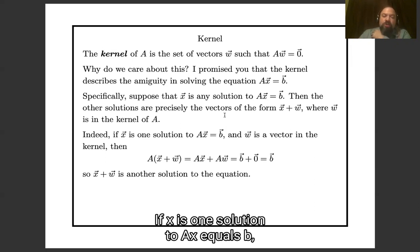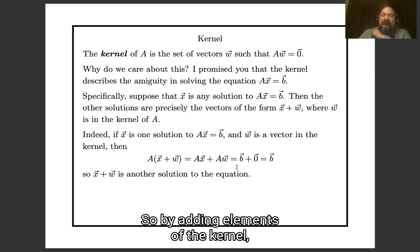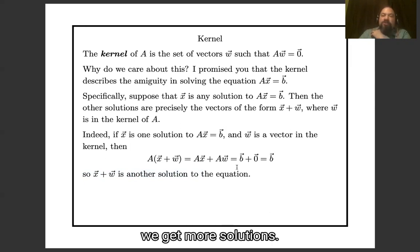And let's see why that works. If x is one solution to ax equals b, and if w is in the kernel, then a times x plus w is ax plus aw, ax is b, aw is zero, b plus zero is b. So by adding elements of the kernel, we get more solutions. And we get all solutions in this way.